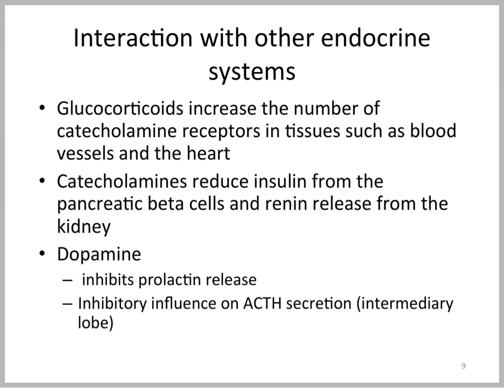Let's summarize the interactions of catecholamines with other endocrine systems. Glucocorticoids are crucial to the synthesis of epinephrine specifically, and they also set up the peripheral response to catecholamines by increasing the number of catecholamine receptors in key tissues like blood vessels and the heart. The clinical significance: if an animal is glucocorticoid deficient — such as in Addison's disease or after too rapid removal of glucocorticoids — it may not be able to mount a blood pressure response to catecholamine release.